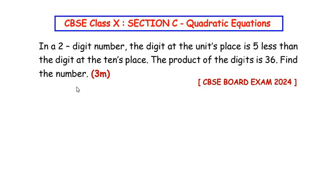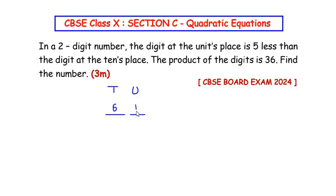Find the number. Let us understand the question first. We have a two-digit number — this is the units place and this is the tens place. The digit at the units place is five less than the digit at the tens place. For example, if we have the number 6 at the tens place, then the units place is going to be 6 minus 5, which is 1.